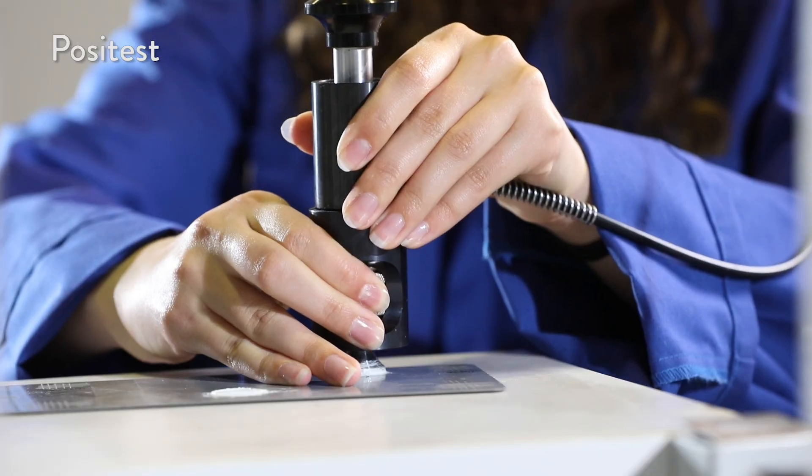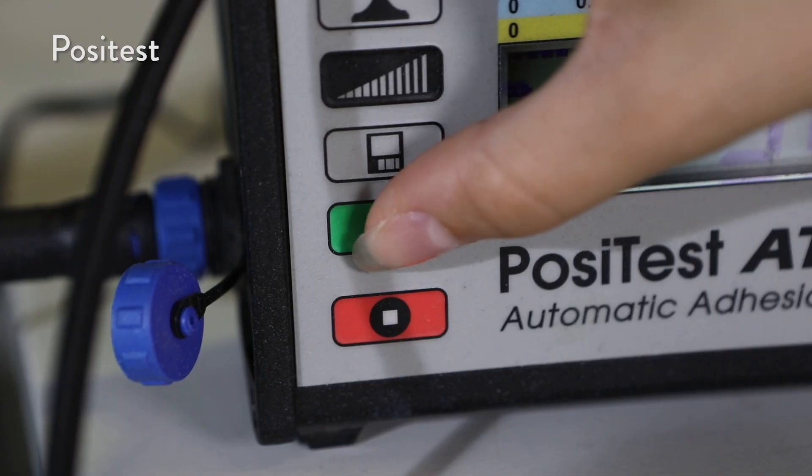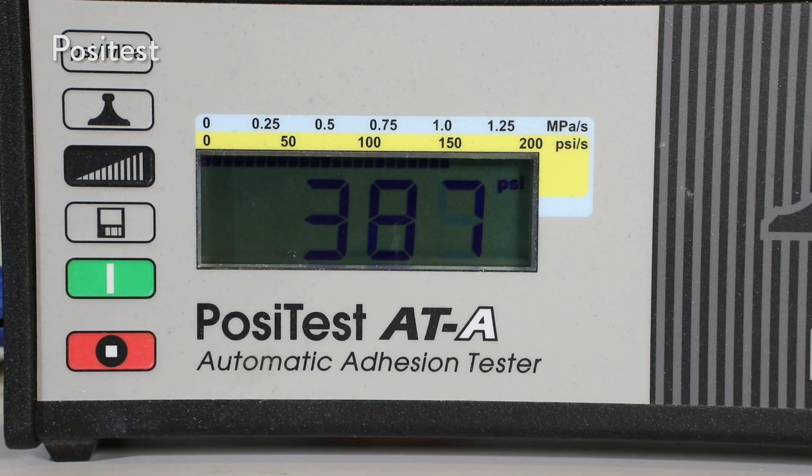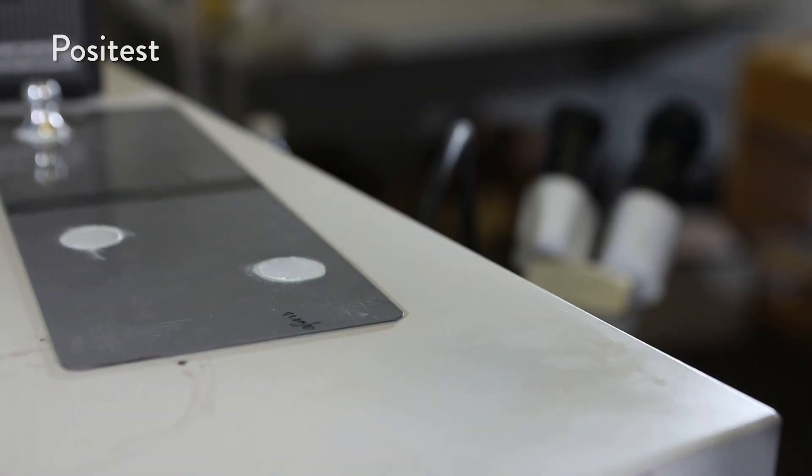Positest measures the force required to pull a specified test diameter of coating away from its substrate using hydraulic pressure. 2K reaches a value that is around three times higher compared to conventional spray paints.